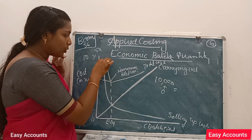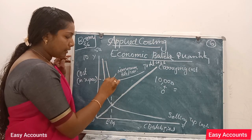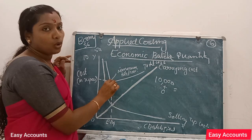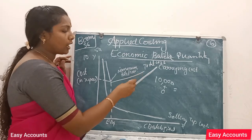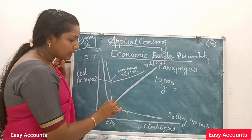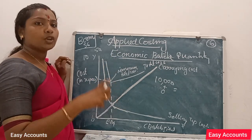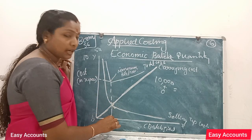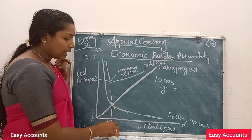Now, if you have the setting up cost and the carrying cost, then the total cost is their sum. The carrying cost intersects the setting up cost curve at a certain point, and at that intersection the total cost is minimized — this gives us the economic batch quantity.